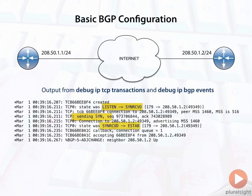This is important for us in the CCIE lab exam because we want to make sure that our BGP adjacencies are up. We want those neighbors to be up. This could get tricky if we've got firewalls, IPS, or different devices in the path that are doing any sort of filtering. So we want to be aware of the ports that are used and how the establishment takes place.